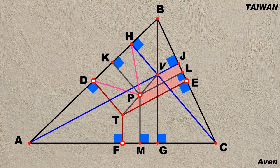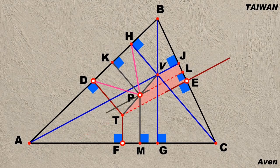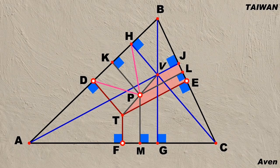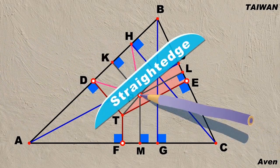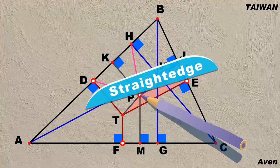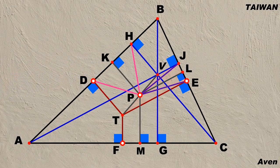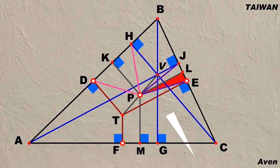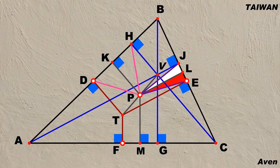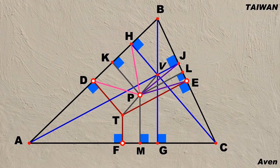Now let's see another trapezoid. Since segment PL is the midline of the trapezoid, JL is therefore equal to LE. After constructing two violet line segments PJ and PE, we find the other two colored triangles are congruent to each other because of the relation side-angle-side.